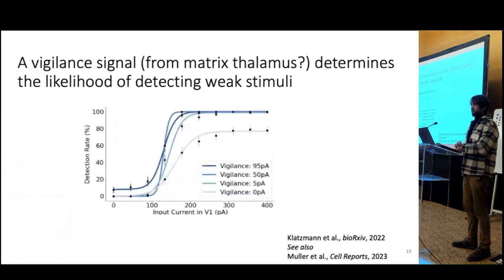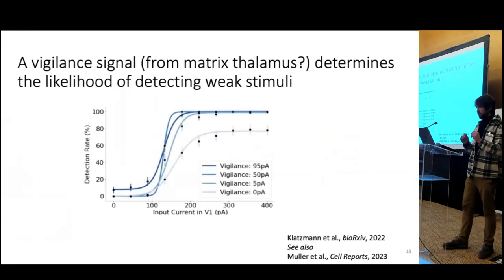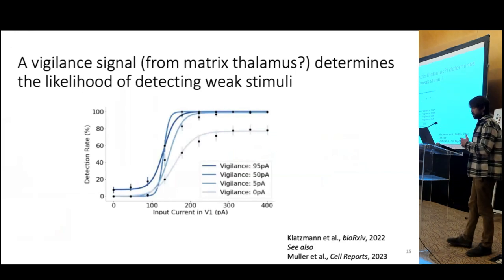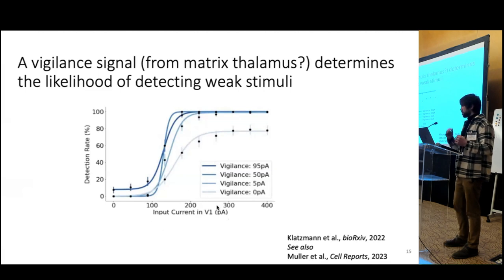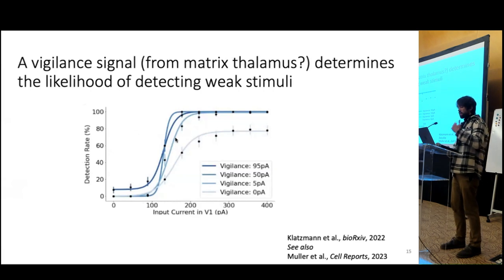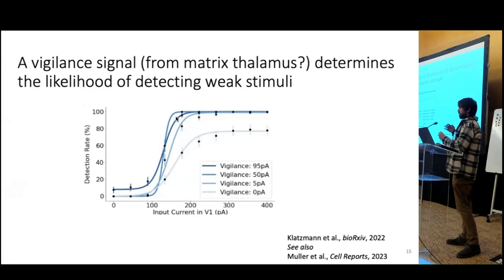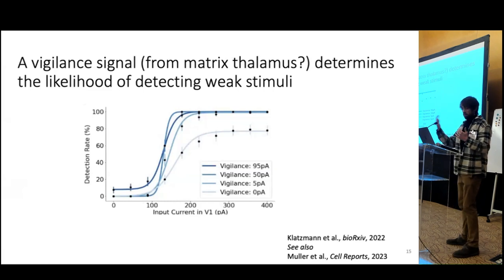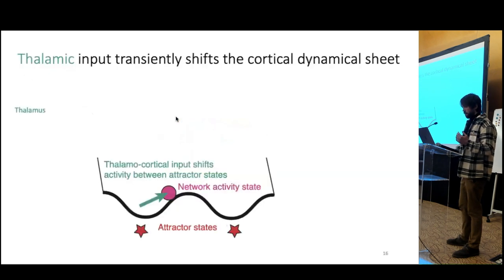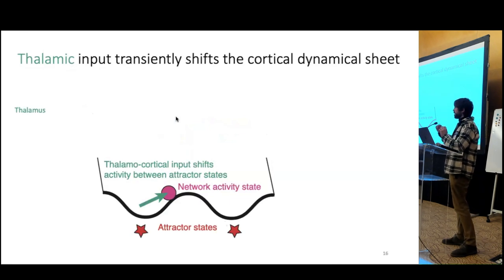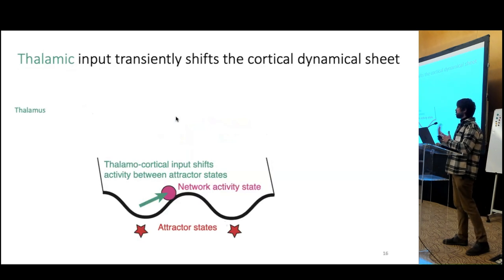We still haven't talked about why some trials are hit trials and some are miss trials. There is one particular parameter in the model we call a visual signal, taking the name from the consciousness literature — a very weak excitatory modulation added to associated cortical areas on some trials. As this visual signal increases, for a given stimulus strength, you increase your detection rate. Because of the pattern of this distributed weak excitation, we think it might be related to the matrix thalamus input that Max Schein's group has recently discussed.